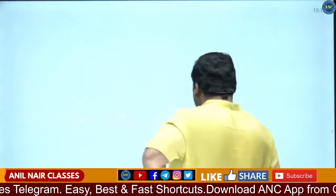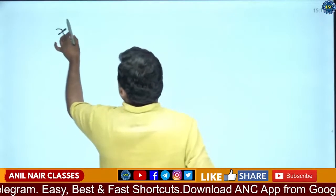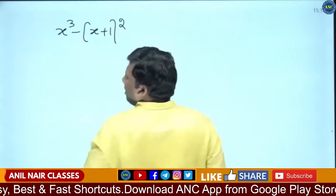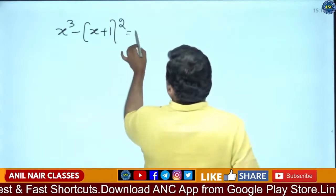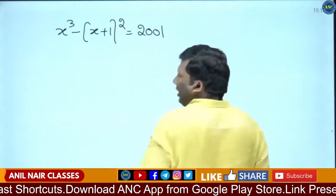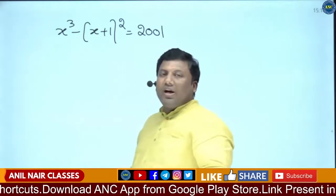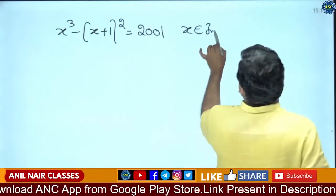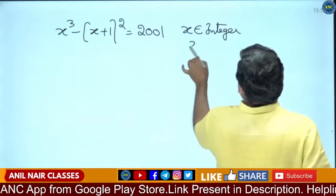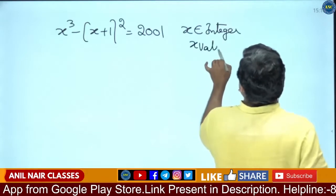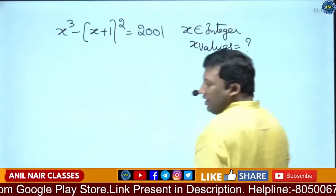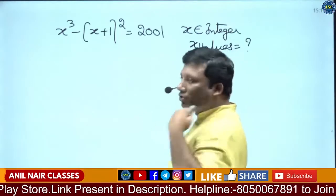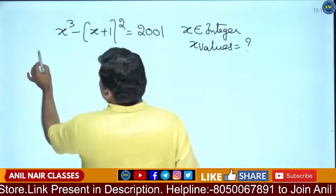Let us solve: x cube minus of (x plus 1) whole square equals 2001. x is an integer. How many values will x take such that this equation is satisfied? x cube minus (x plus 1) whole square equals 2001. First we will see the traditional method, then I will tell you the optimal method.